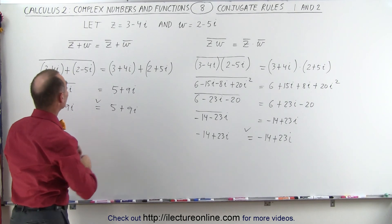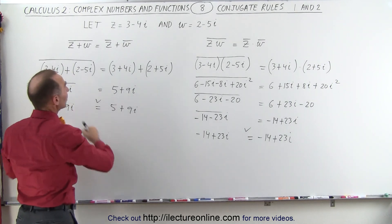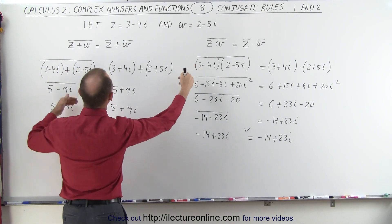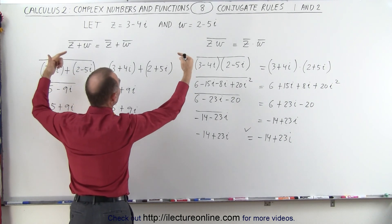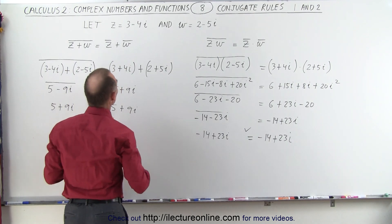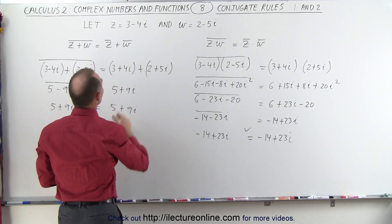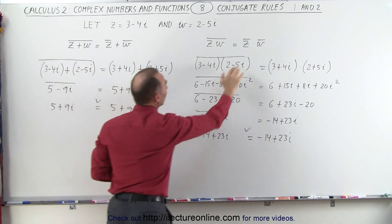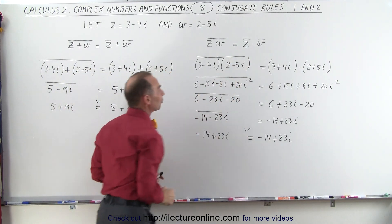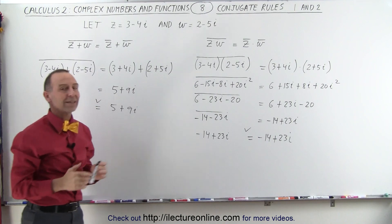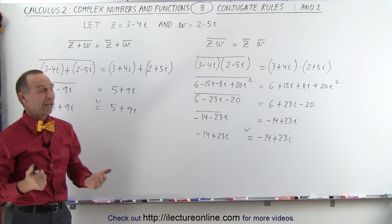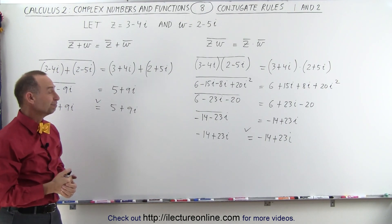So that means we can first add or multiply the complex numbers together and then take the conjugate of those, or we can simply add or multiply the conjugates, and we get the exact same result. And that's how it's done.